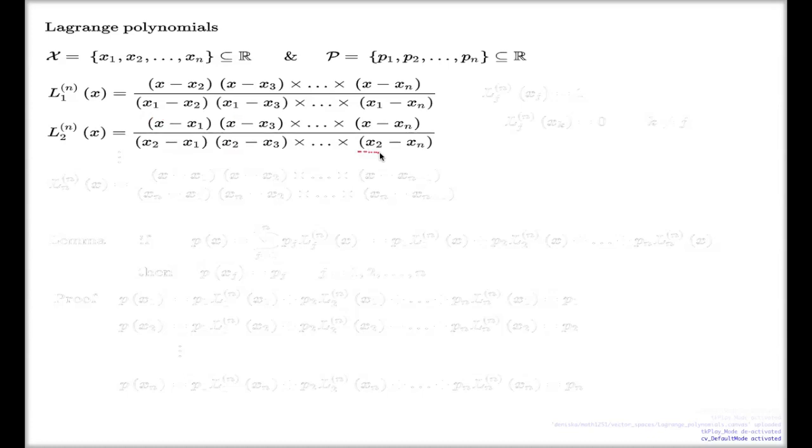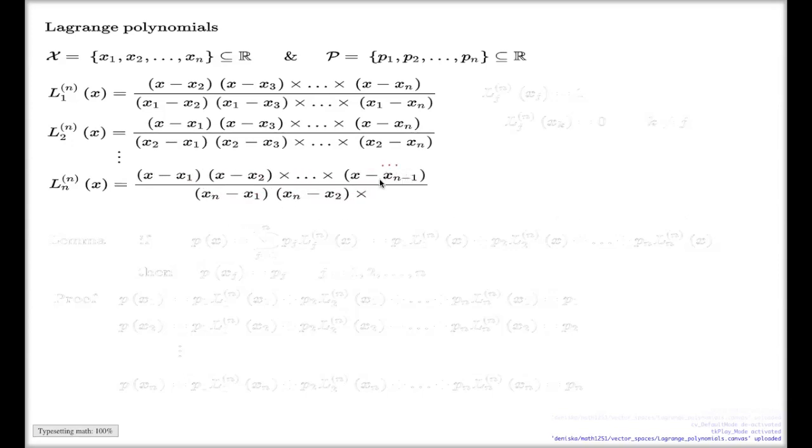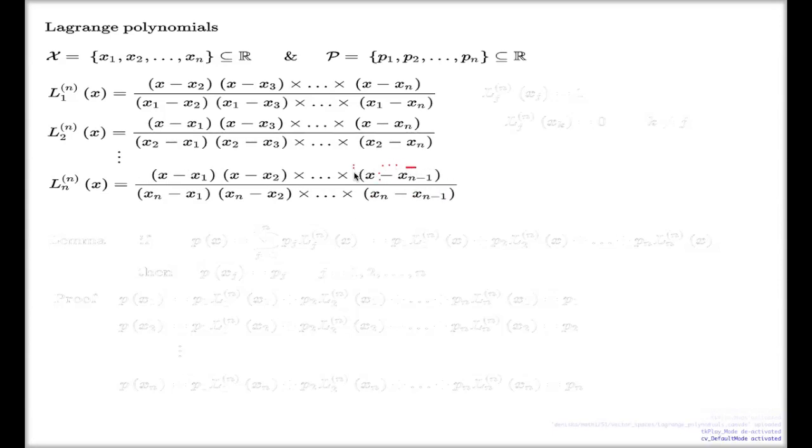You build n polynomials like this. You take these linear brackets and you're missing one point from that linear bracket. Where you stop at the n take one, this time you're missing the last point. And the denominator, it's where the variable is replaced with the missing value.